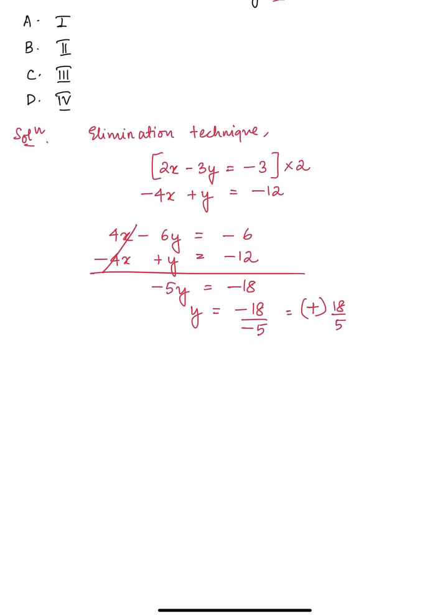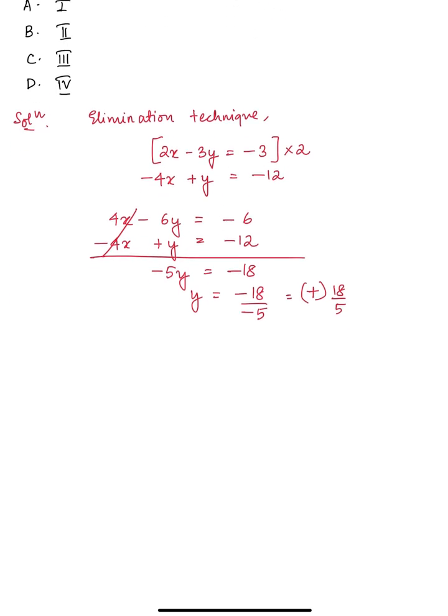Now we can get the value of x. So just from this equation: minus 4x plus y equals minus 12. Minus 4x equals minus 12 minus y, that is minus 12 minus 18 by 5. So minus 4x is minus 60 minus 18 by 5, that is minus 78 by 5.